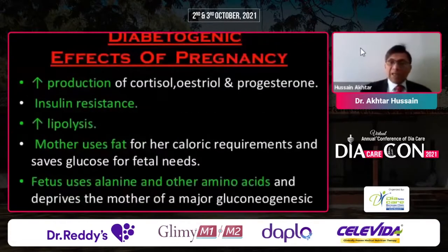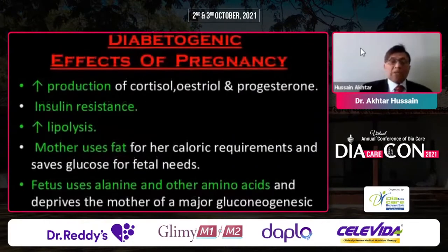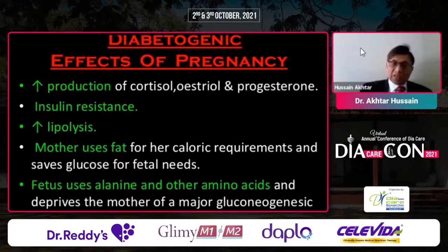We should start the prevention of type 2 diabetes since inception — that is, in the gestation period. We also know that the effects of pregnancy increase the production of cortisol, cholesterol, progesterone, and so on, which increases insulin resistance. Lipolysis increases as the mother uses fat for caloric requirements and saves glucose for fetal needs.